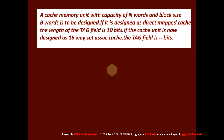A cache memory unit with capacity of n words and block size b words is to be designed. If it is designed as a direct mapped cache, the length of the tag field is 10 bits. If the cache unit is now designed as a 16-way set associative cache, how many bits are required for the tag field?